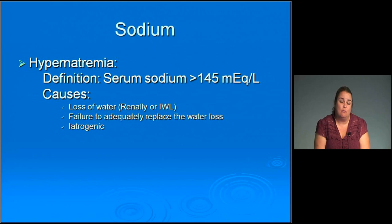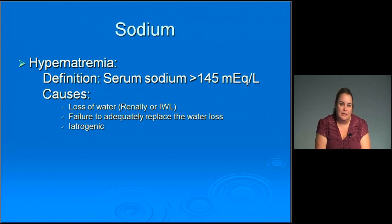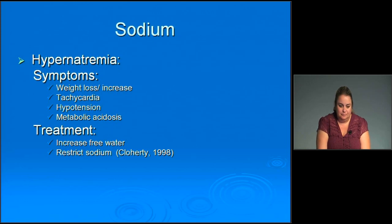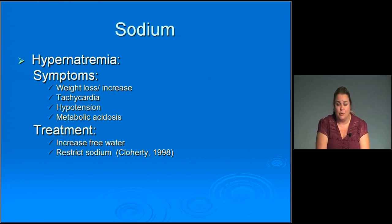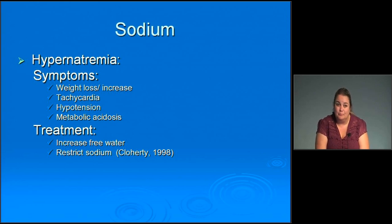Hypernatremia is considered when sodium is more than 145. Causes include loss of water from insensible water loss or renal inability to retain it, failure to adequately replace water loss, and iatrogenic causes. Treatment involves increasing free water and possibly restricting sodium. Symptoms include weight loss or possibly weight gain, and it can be accompanied by tachycardia, hypotension, and metabolic acidosis.